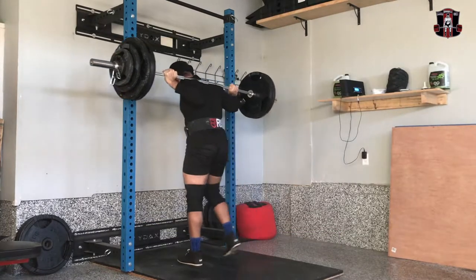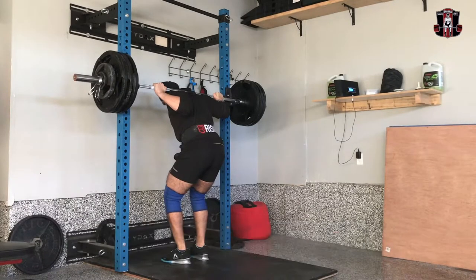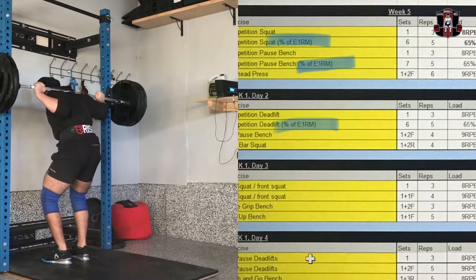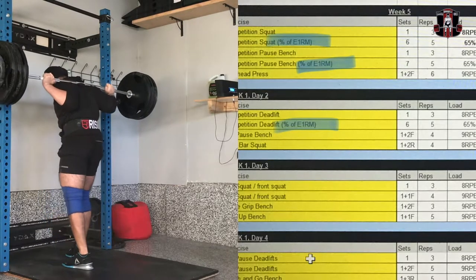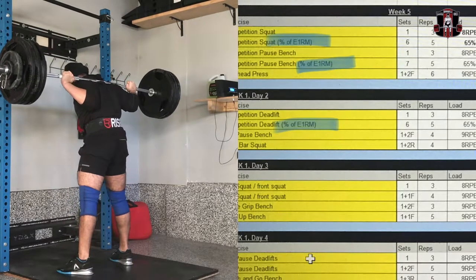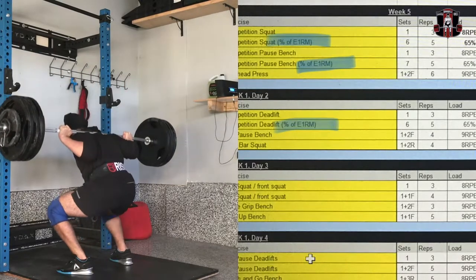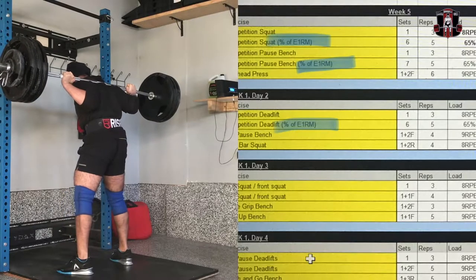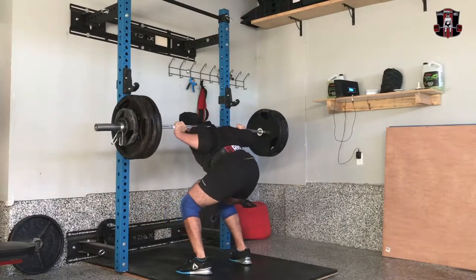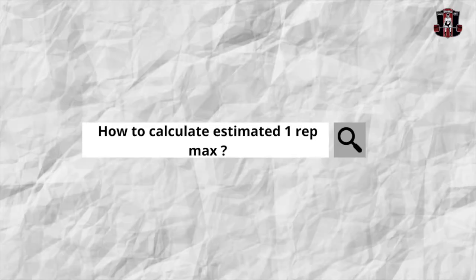As this is week five of the Calgary Barber eight-week program, we have to use estimated one rep max for our back squats, which will be 65% of estimated one rep max. To start week five, you perform one set of three reps at RPE 8, then calculate your estimated one rep max. After that, you perform six sets of five reps at 65% of your estimated one rep max.